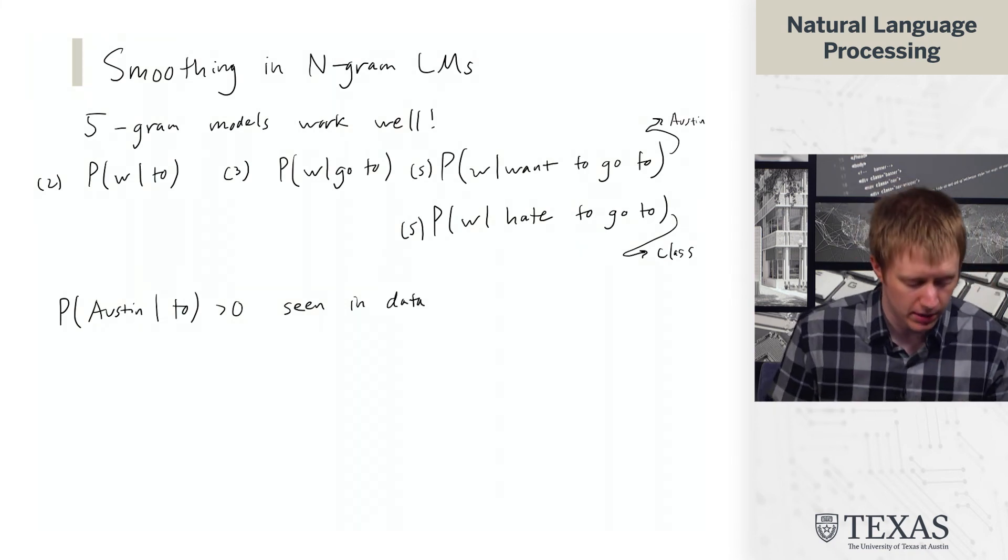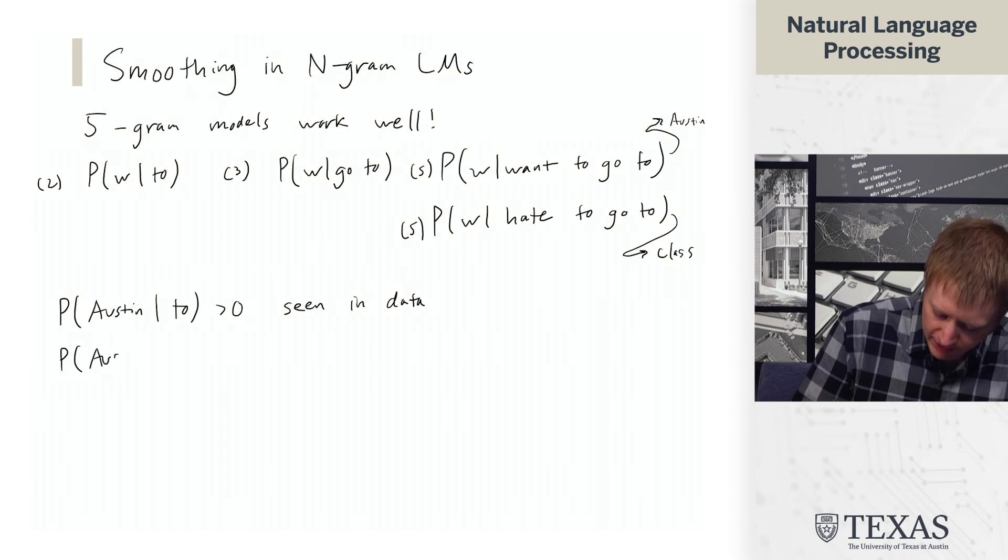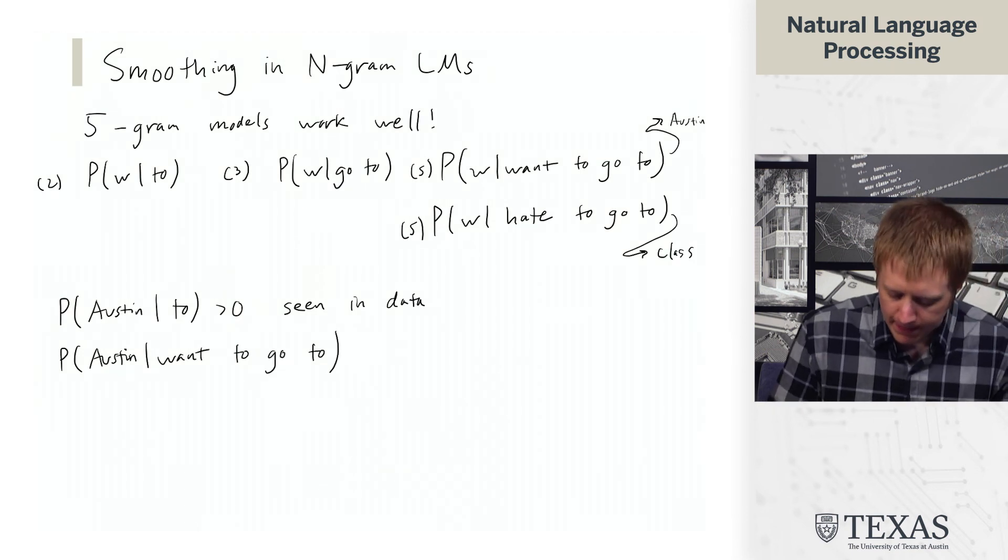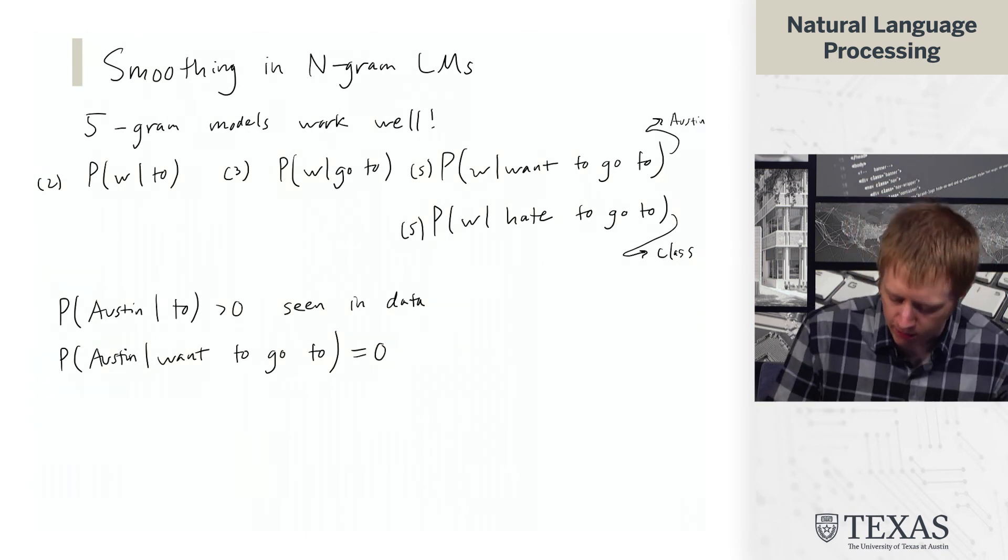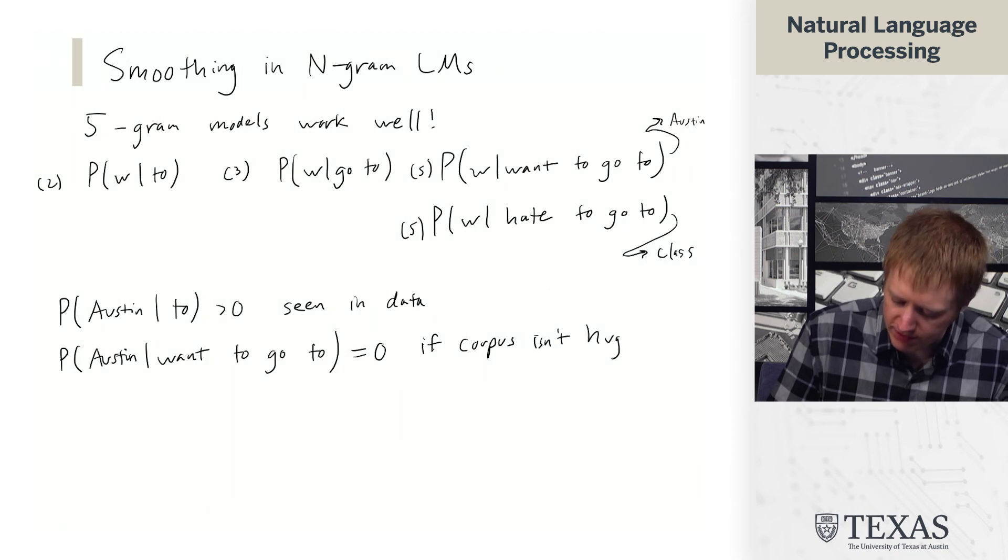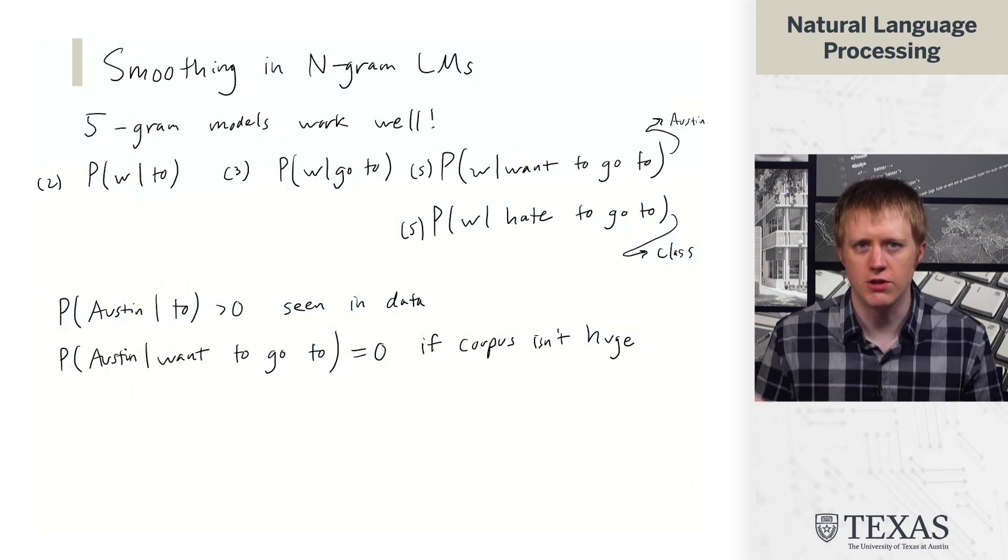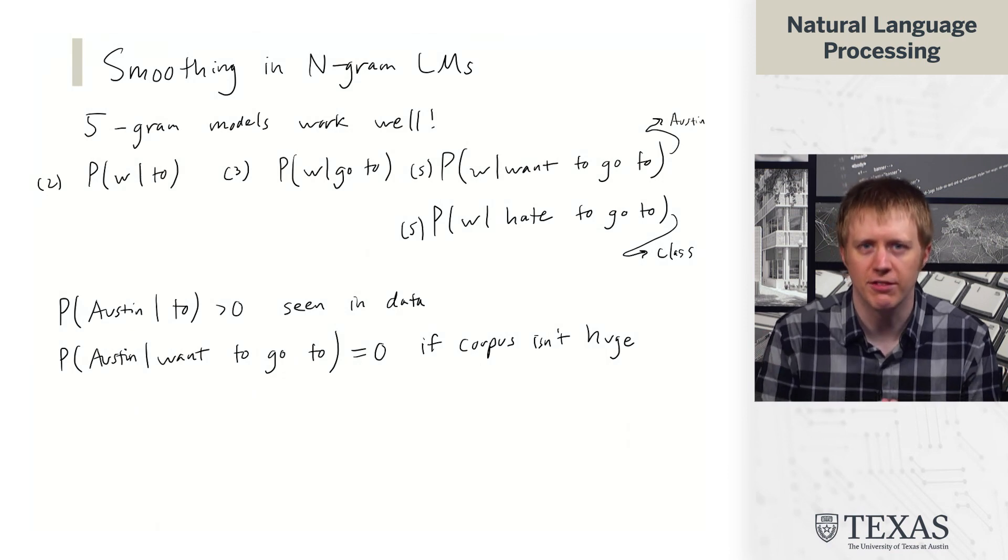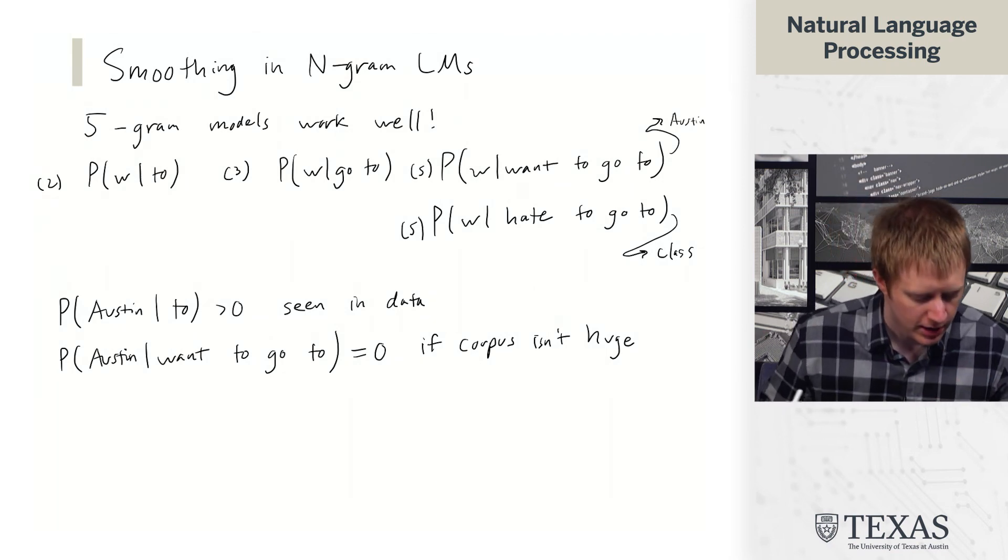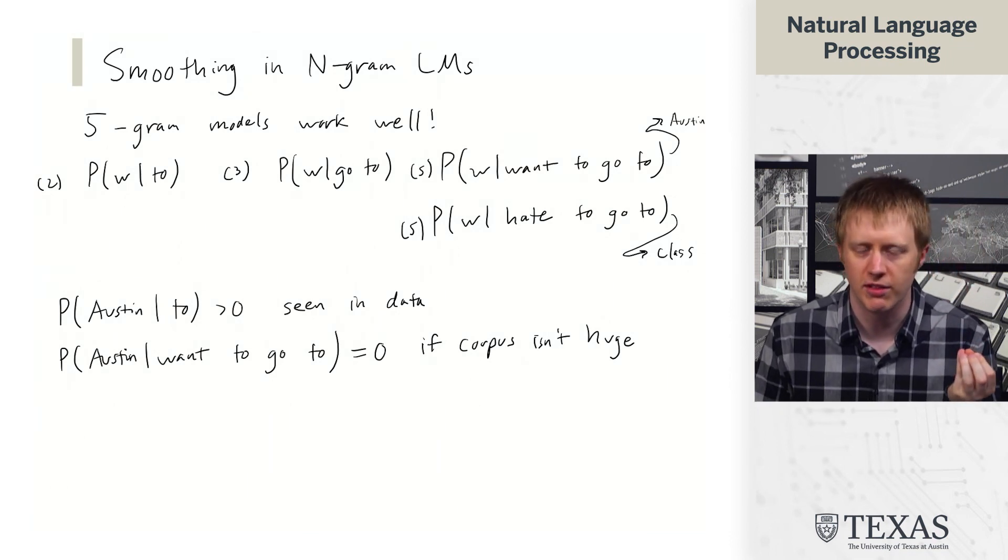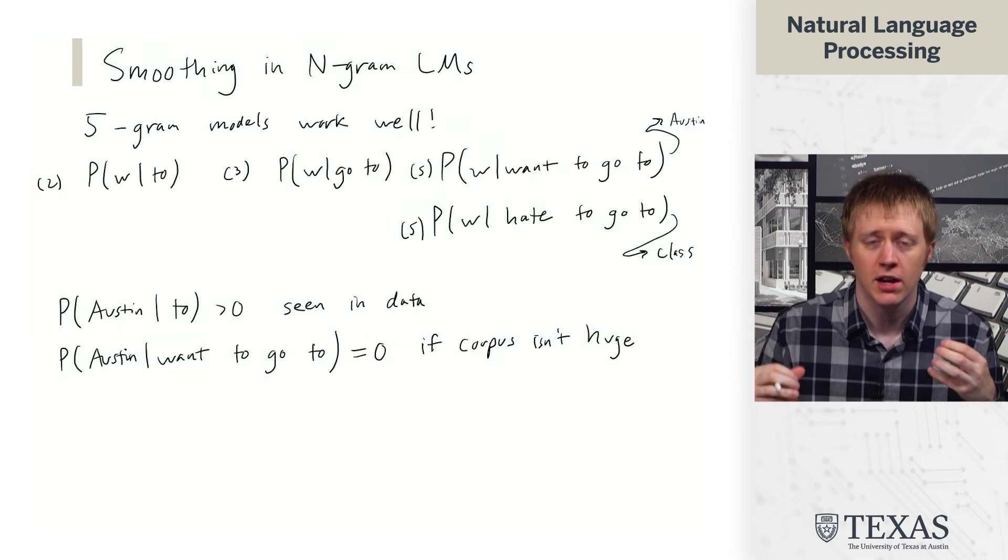But this only holds for a 2-gram model. If we think about the probability of Austin given want to go to, a lot of times this is going to be zero if the corpus isn't huge. And even if you do have a huge corpus, are you necessarily going to see want to go to, hate to go to, like to go to, et cetera? Every combination of it with every place, no, you're not. So the reason for that is just because we don't see this 5-gram want to go to Austin occur with non-zero count.